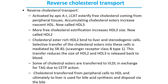The first step is activation of the L-CAT enzyme by ApoA1, the protein on the surface of HDL. ApoA1 activates L-CAT, which esterifies the free cholesterol coming from peripheral tissue and converts it into cholesterol esters. This cholesterol ester increases the size of the HDL molecule, which first becomes HDL3, and with more cholesterol esterification and uptake becomes HDL2.